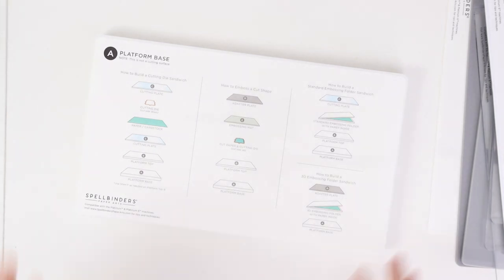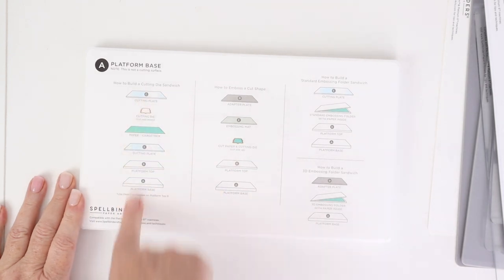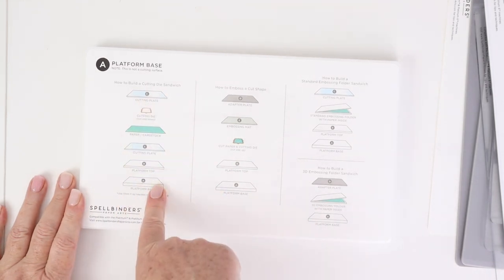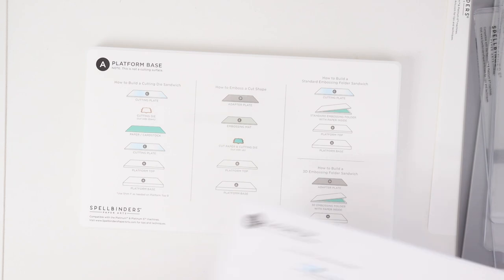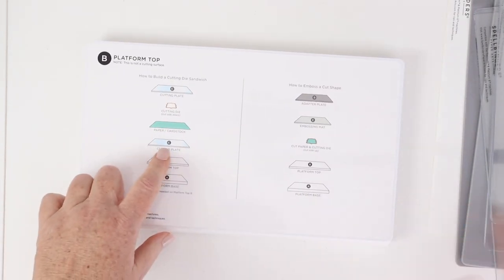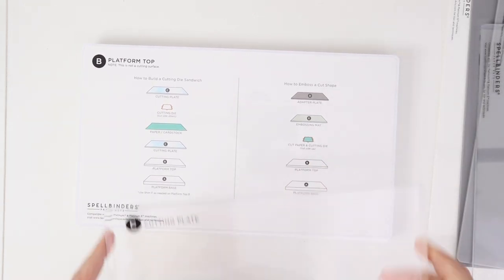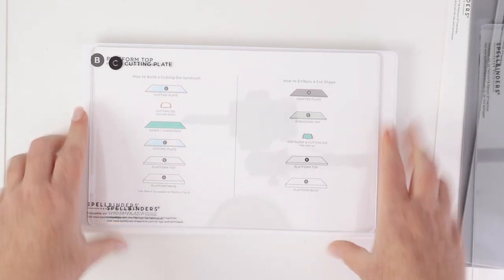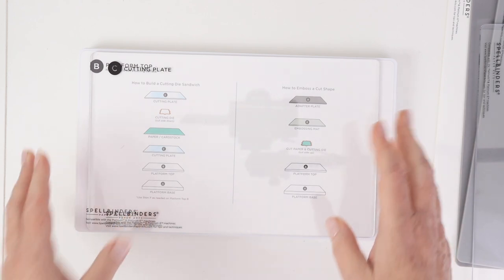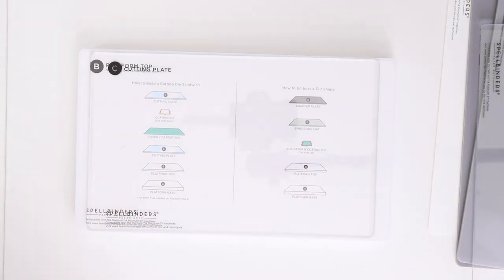So let's start by taking a look at this sandwich. This is the normal die cut sandwich, which is the platform base, then the platform top. And this is what I'm going to keep near my machine. A bottom cutting plate, then you're going to put your paper and a die, and then you're going to put your top cutting plate on top of that. So that's your basic die cut sandwich.